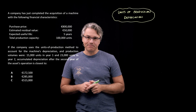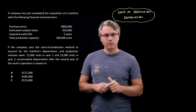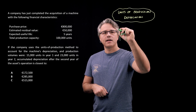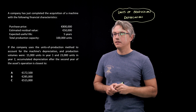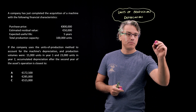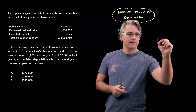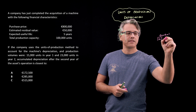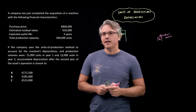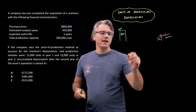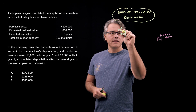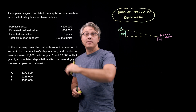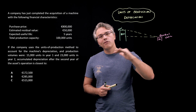The units of production method of depreciation is relatively simple. We'll take the original cost of the asset, which is €800,000, and we'll take into account the estimated residual value — how much we think this asset will be worth at the end of its useful life — which is €50,000. This residual value is estimated and therefore something which can potentially change during the life of the asset. The whole idea behind depreciation is to go from cost to residual value, making the asset's carrying amount lower and lower.